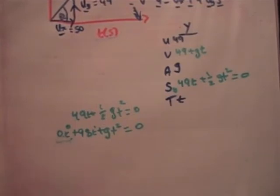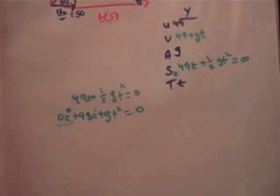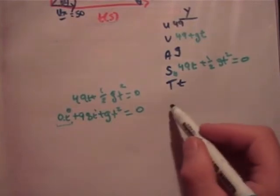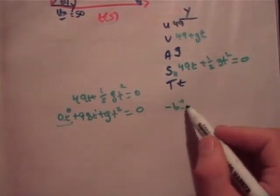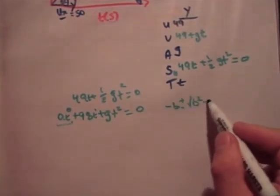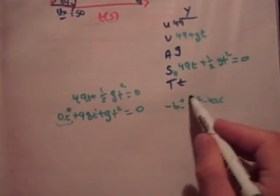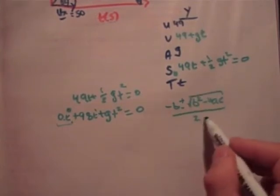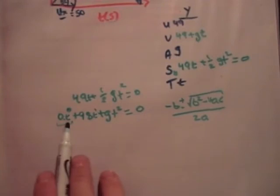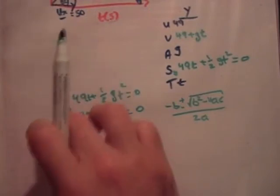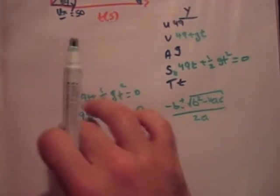I'm not going to use the formula minus b plus or minus the square root of b squared minus 4ac over 2a. I would usually use that formula, and I'll use that formula where the number multiplied by t to the 0 is not 0. In this case, it doesn't matter.